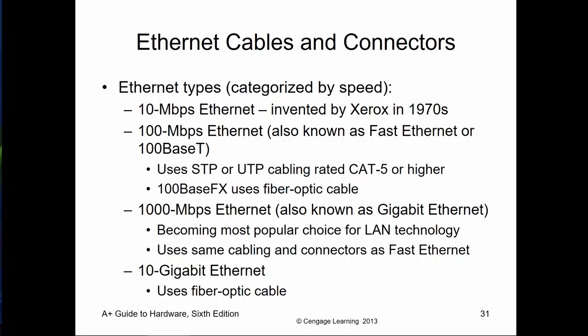Ethernet cables come in different speeds — normally 10 or 100 megabit, or gigabit. We're finding that more and more connectivity is 10 gigabit. It does not just use fiber — we can do copper-based like Cat 6 with 10 gigabit. There are faster speeds but those are getting into very unique situations.